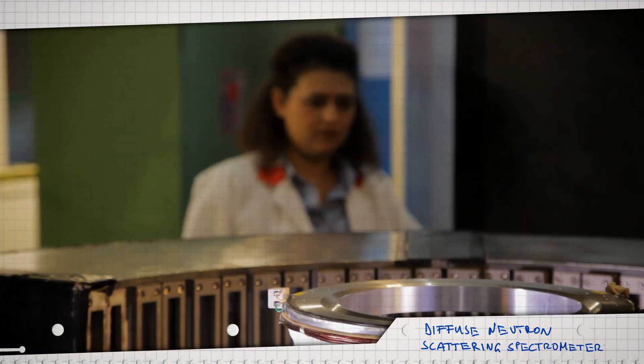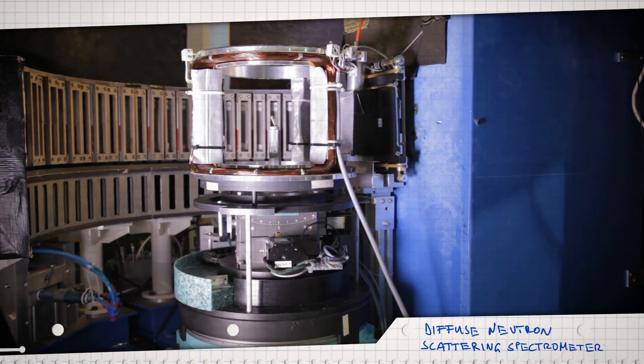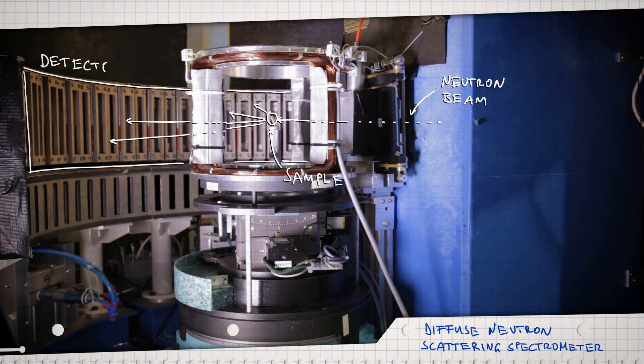The basic experimental setup is the same. Neutrons, sample, detector. But this one has a few more tricks up its steel sleeve. It can record the spin changes of the neutrons.